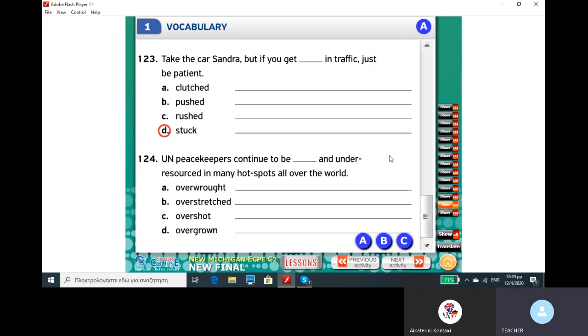UN peacekeepers continue to be gap and under-resourced in many hotspots all over the world. Options: overwrought, overstretched, oversawed, overgrown.